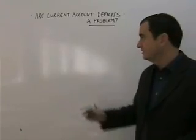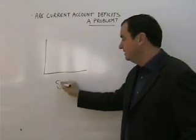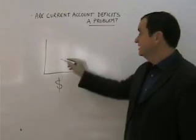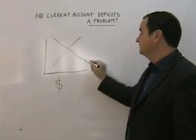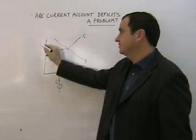Take America, for example. In the dollar market, there is an equilibrium position. Demand, supply, this is the equilibrium price of dollars.